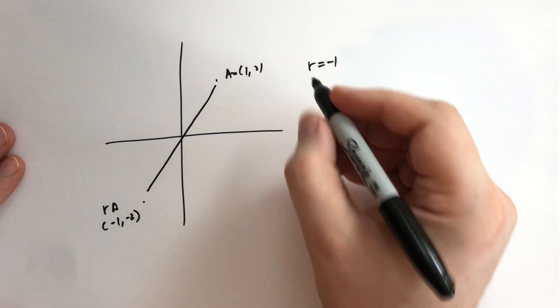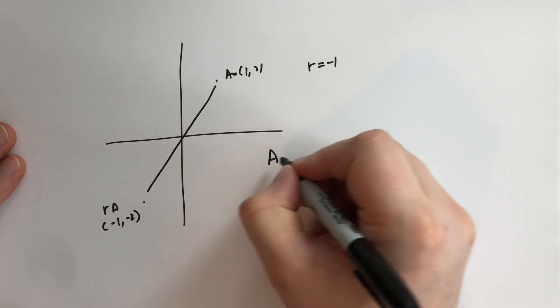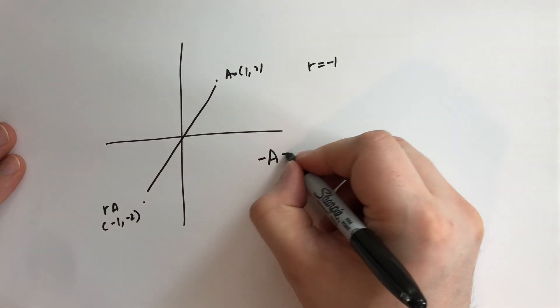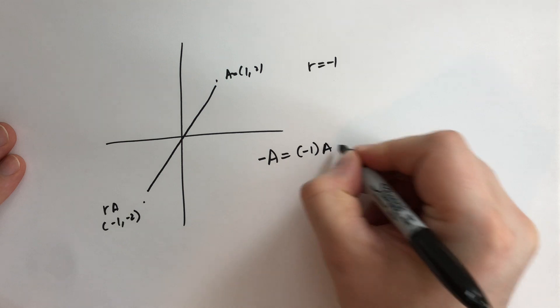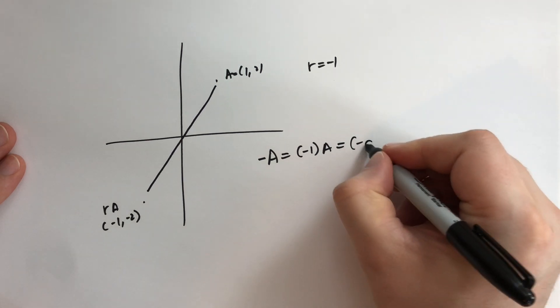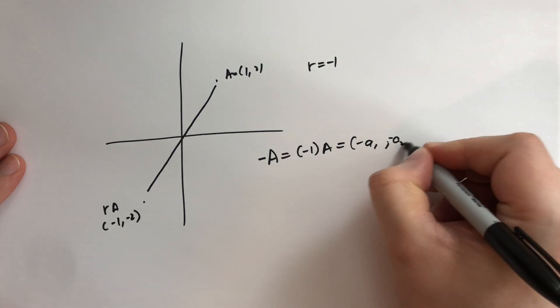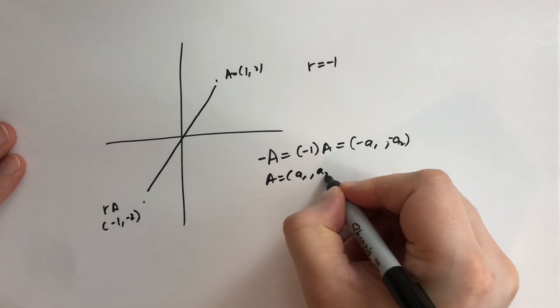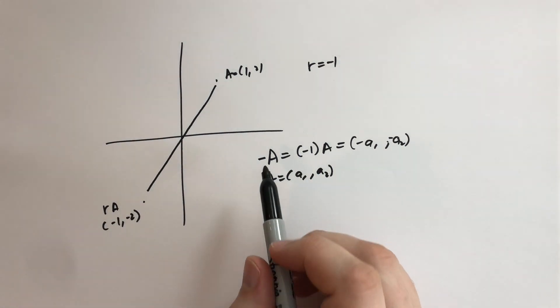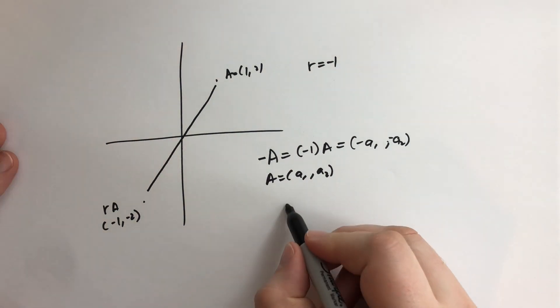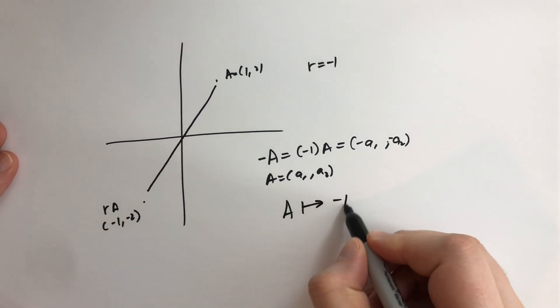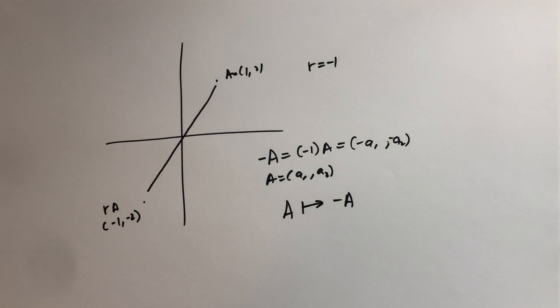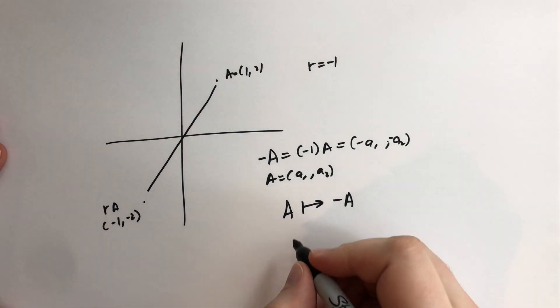Now we call this negative 1. We can say A times minus is equal to minus 1 times A. So that's just you just take the minus of the coordinates. That's if A is equal to A1 comma A2. So we write that as minus A. And this mapping where we take A and we map it to minus A we are going to call the reflection through O.